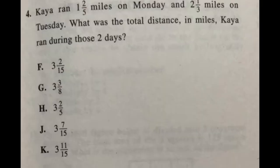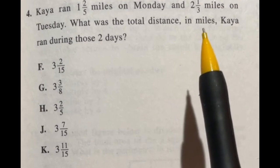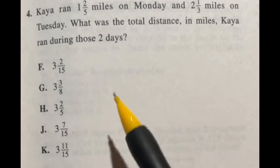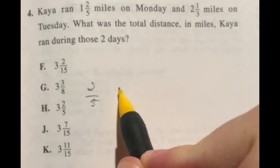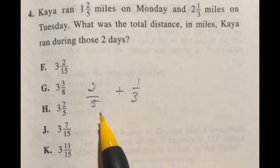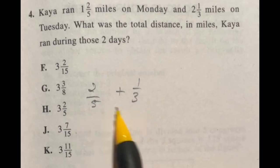So it says for number 4 that Kaya ran 1 and 2 fifths mile on Monday and 2 and 1 third miles on Tuesday. What was the total distance in miles that Kaya ran during those two days? So the hardest part here is adding fractions together because the 1 plus 2 should not be an issue. But the 2 fifths plus the 1 third might be. So let's take a look at this 2 over 5 plus 1 over 3. Now you may have forgotten but when you're adding fractions you need to have the same number on the bottom. So what we do is we multiply both the top and bottom by the same number to get the two bottom numbers to be the same. So in this case what's the smallest number that 5 and 3 both go into? Well it's 15.